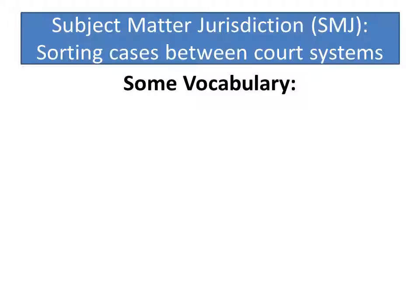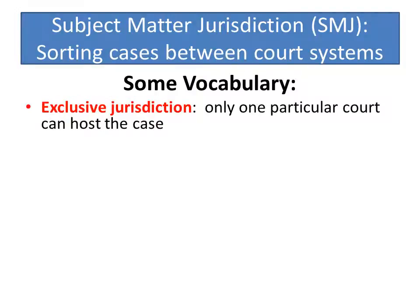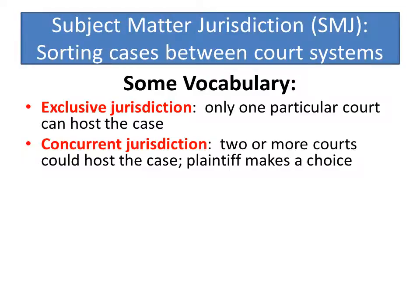We're trying to figure out the most efficient way to handle cases before the courts that are best equipped to handle them. Some basic vocabulary: when we say a court has exclusive jurisdiction, it means that only that one particular court can host the case. When we say courts have concurrent jurisdiction, it means that there are two or more courts that could host the case, and the plaintiff gets to choose which court to file in.